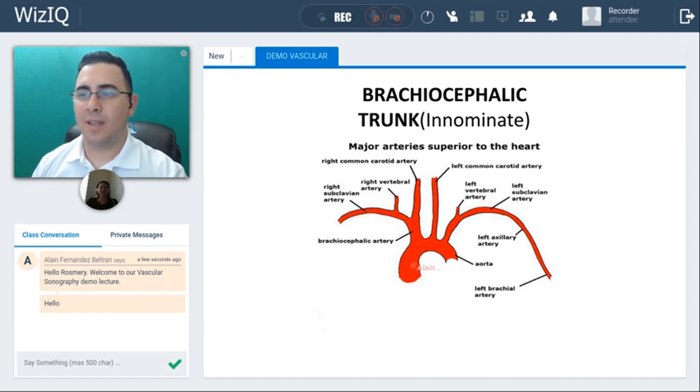This is the aortic arch so you can see it. And it has this first branch that we call the brachiocephalic or innominate artery. Now brachiocephalic is going to give you more sense because brachium means arm, cephalic is towards the head. So basically the brachiocephalic is going to have the right common carotid artery. Next branch is going to be the left subclavian.